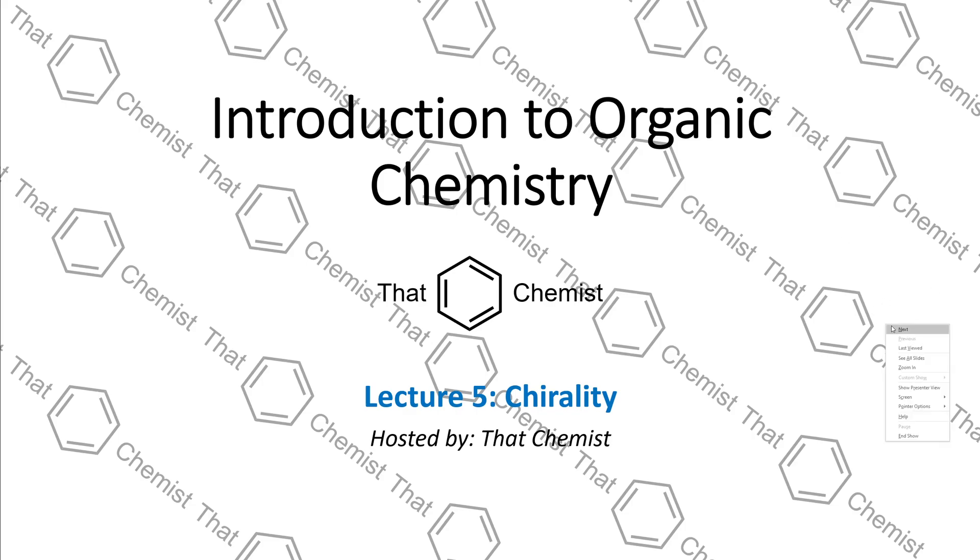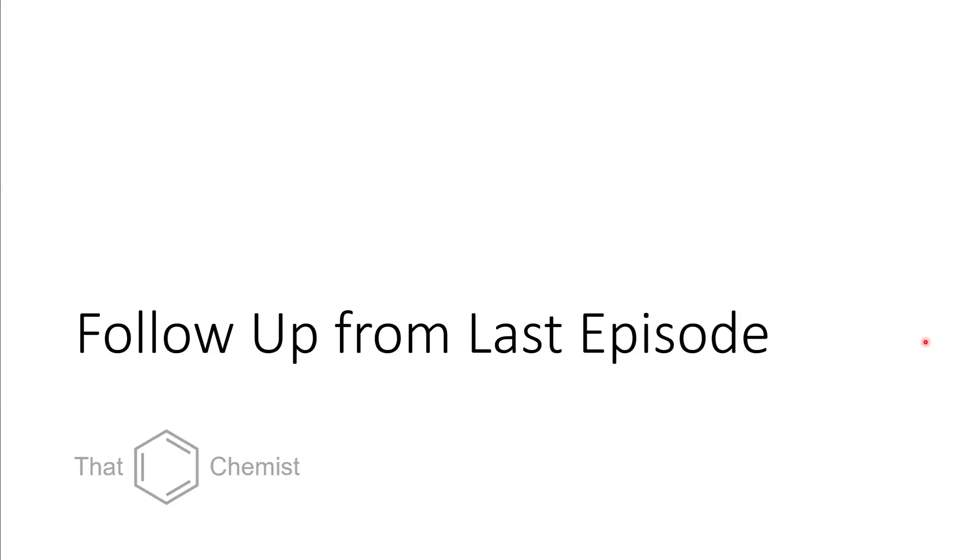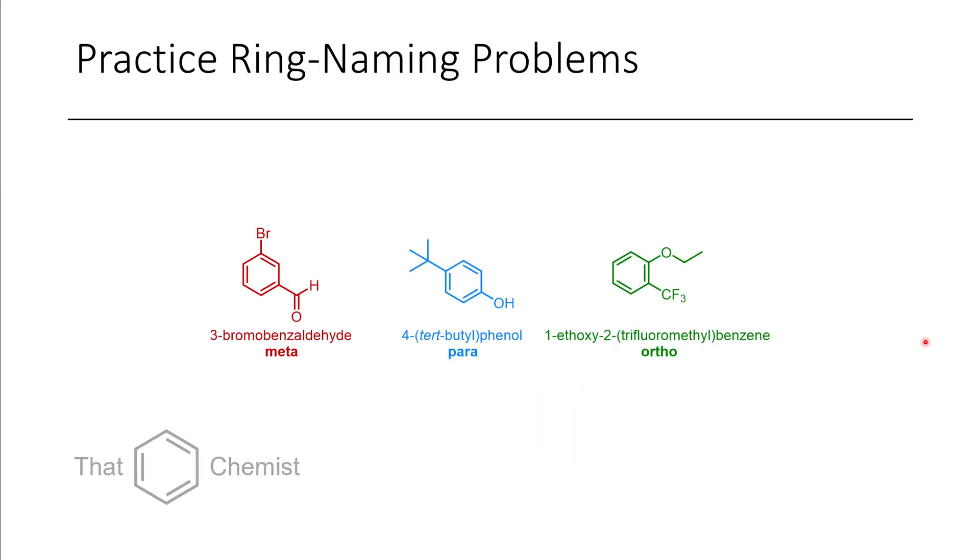Hello everybody, welcome back to another episode of Introductory Organic Chemistry. First, we're going to follow up with some questions from last lecture. Here we have 3-bromobenzaldehyde, 4-tert-butylphenol, and 1-ethoxy-2-trifluoromethylbenzene. If you recall, if we have something in the 1 and 3 position, we call that meta. If we have something in the 1 and 4 position, we call that para. And if we have something in the 1 and 2 position, we call that ortho.